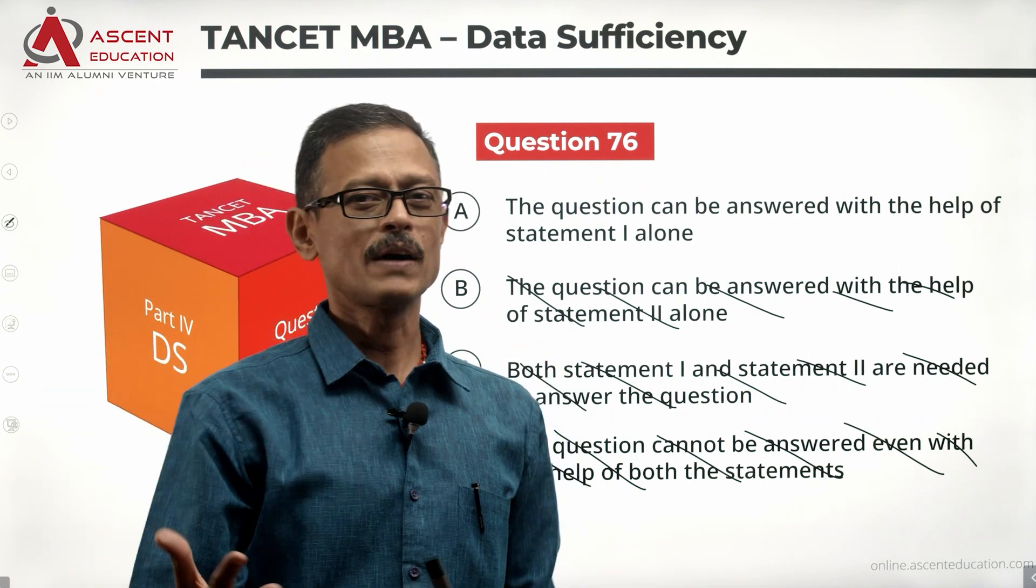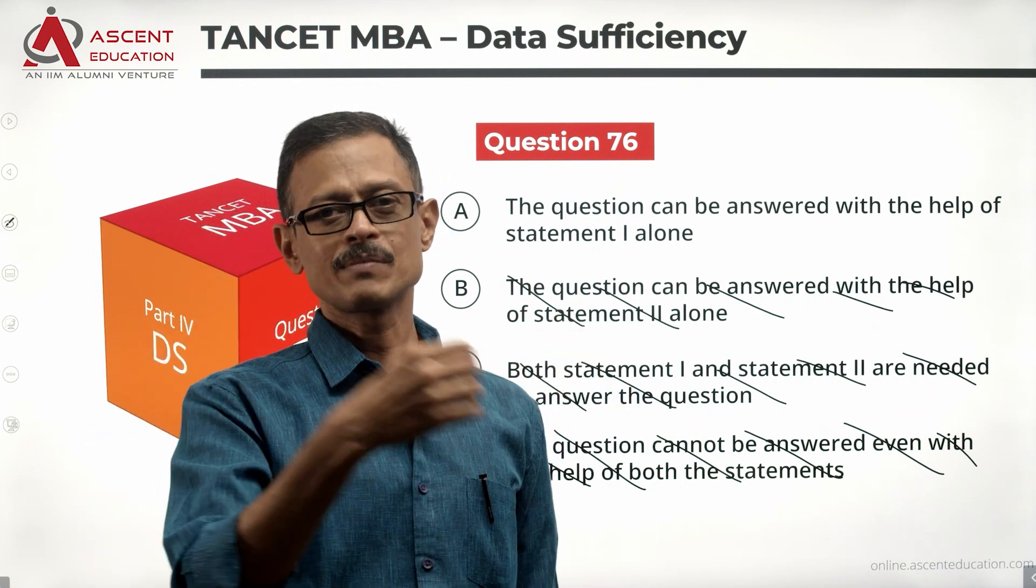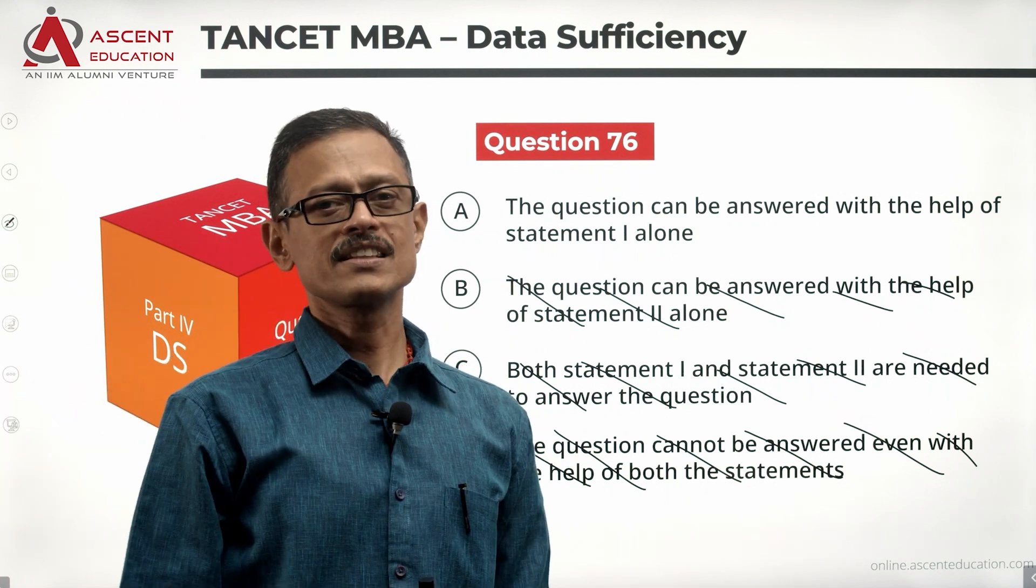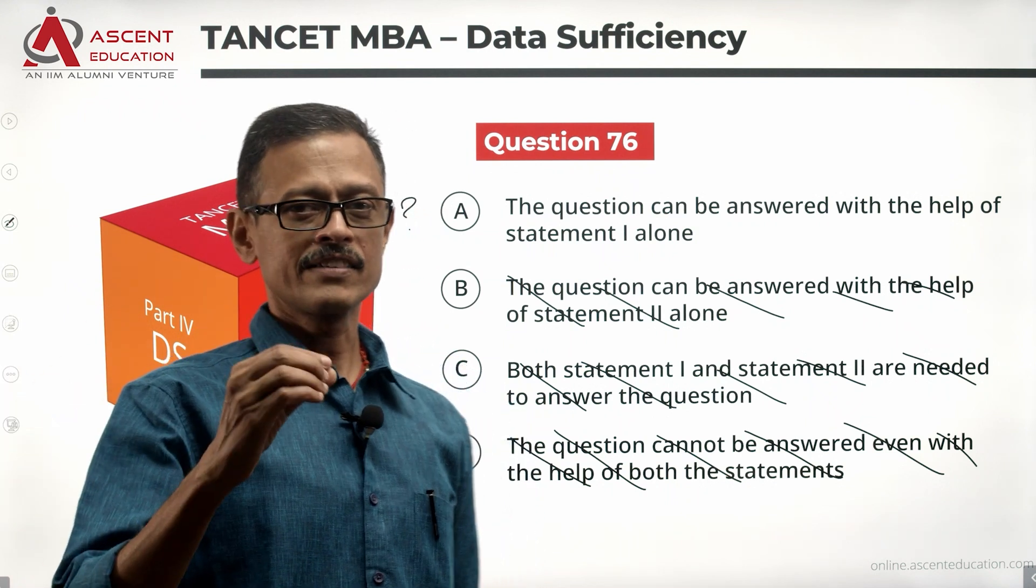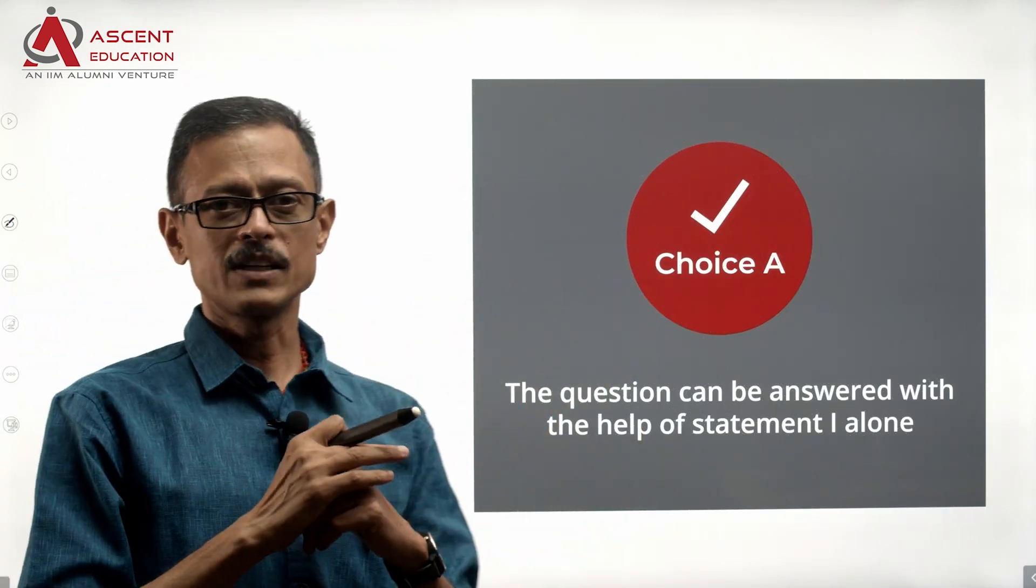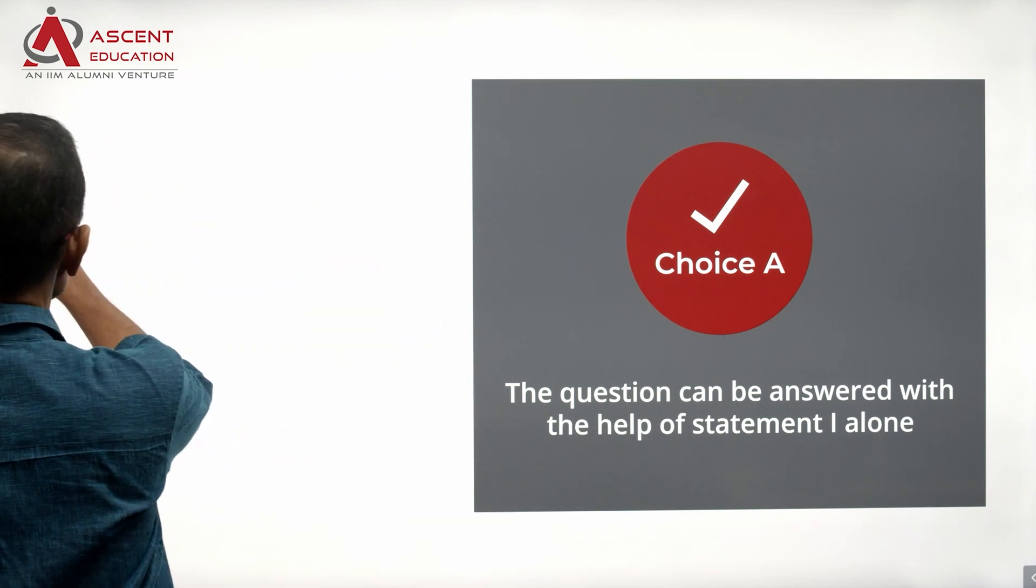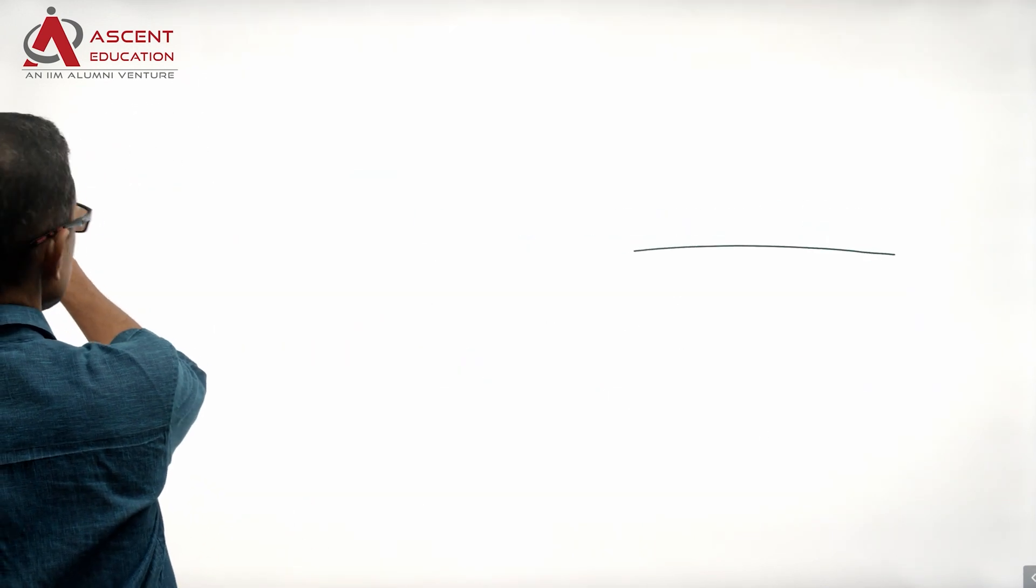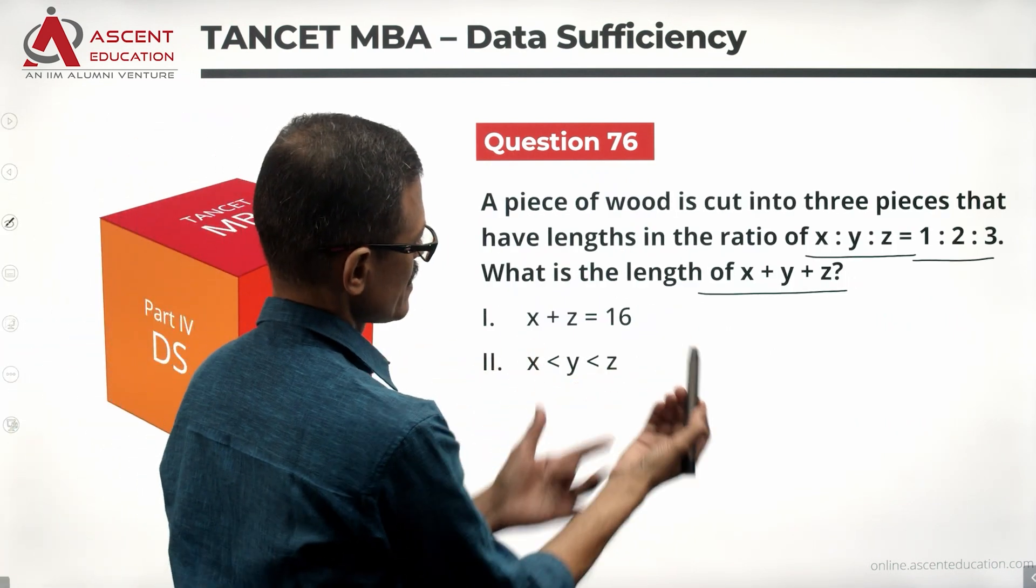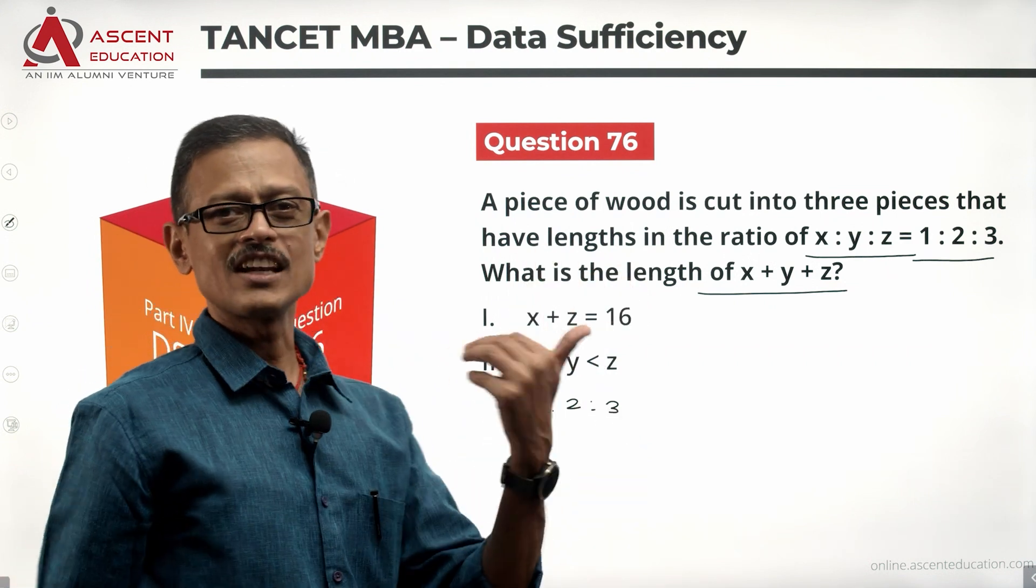Statement 2 is not even worth looking at. Learning value: 1 alone is sufficient. Answer option is A. We are not going to look at statement 2 at all. In learning mode we will just spend half a minute going back to telling you that statement 2 says X is less than Y is less than Z. 1 is to 2 is to 3 is the ratio. Obviously length cannot be negative.